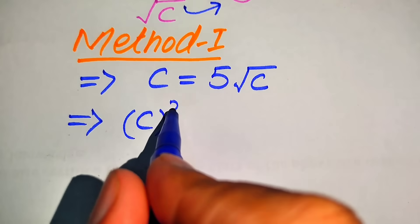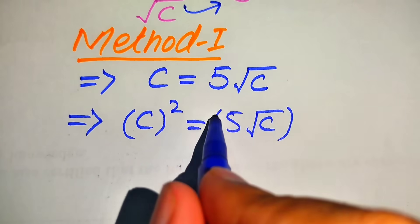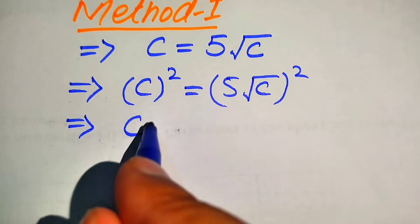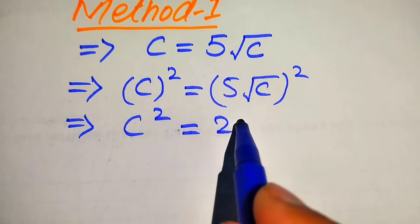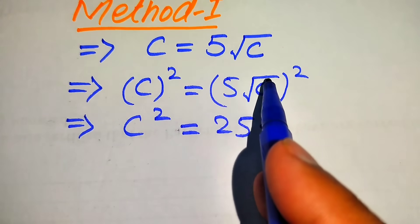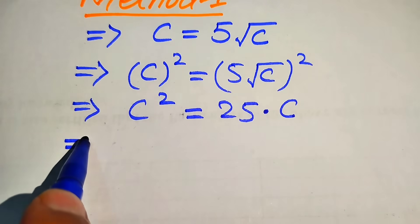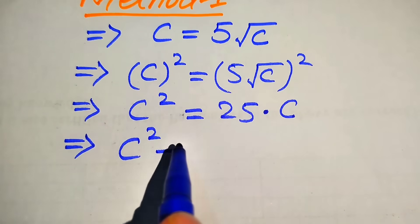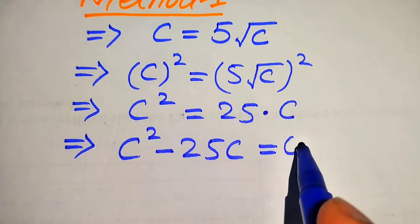When we take squaring, it will be written as c squared equals 5 times square root of c, whole squared. We have c squared on the left, and on the right, 5 squared equals 25, and square root of c squared gives us c only. So further in the next step, we move 25c to the left-hand side, and it is written as c squared minus 25c equals 0.